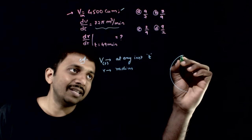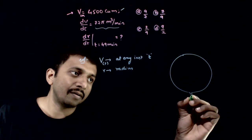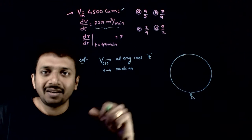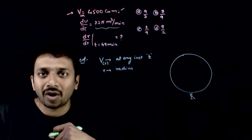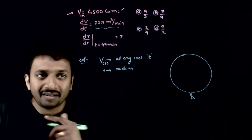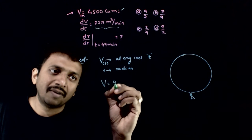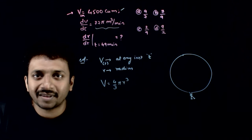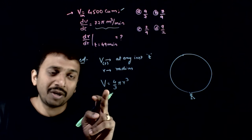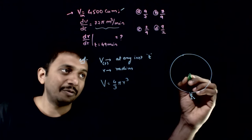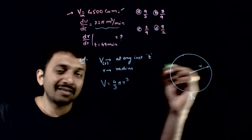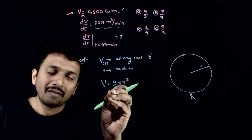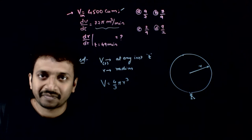Let us take that this is the balloon. As the air is leaking from this, the radius also decreases simultaneously as the volume decreases. But at each instant, the volume of the balloon will always be equal to (4/3)πr³. This is due to geometry — the volume of the balloon is (4/3)πr³, where R is the variable radius and V is the variable volume.